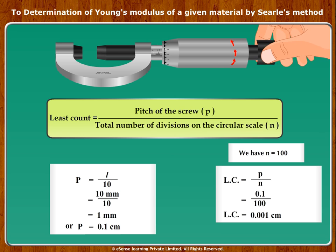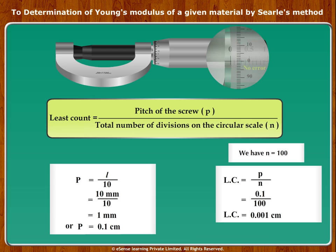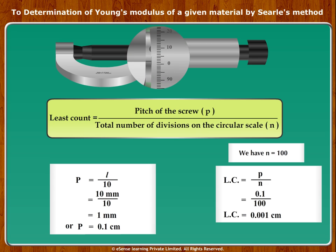Check by closing the screw completely whether the instrument has any zero error. If the circular scale 0 line coincides with the reference line of the main scale, then there is no zero error. Here the 0th line is below the reference line, hence the error is positive.